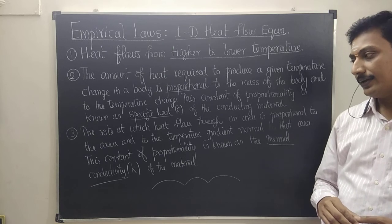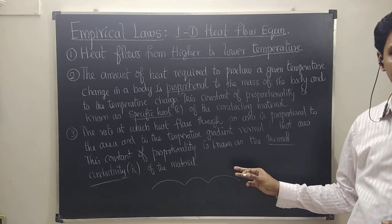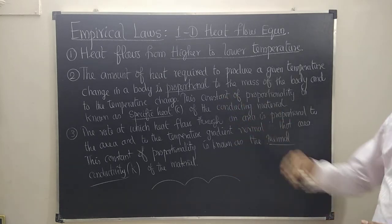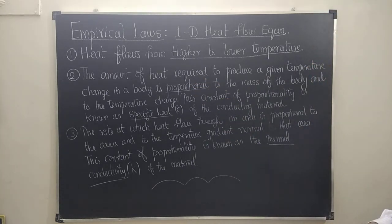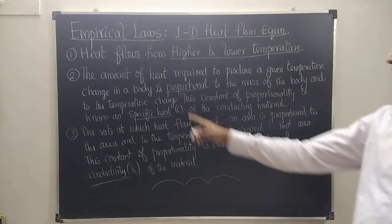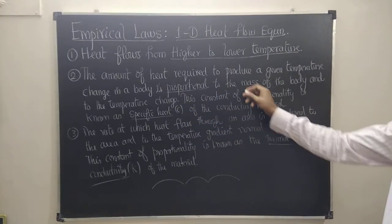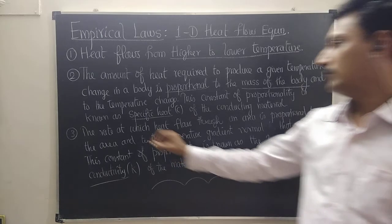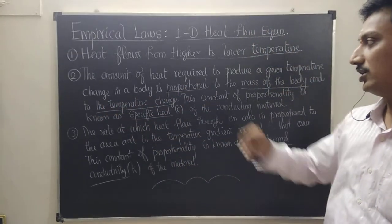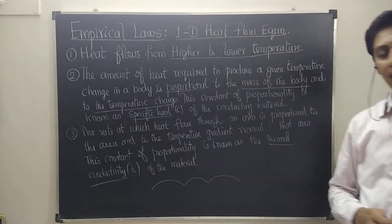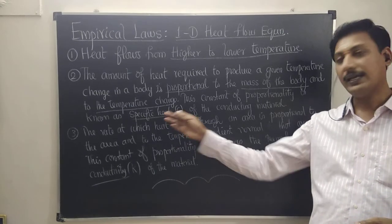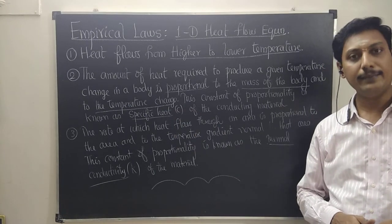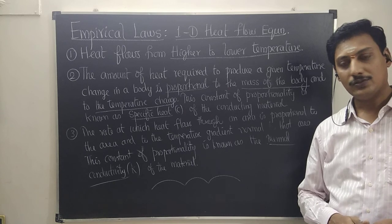The second law states that the amount of heat required to produce a given temperature change in a body is proportional to the mass of the body and to the temperature change. This constant of proportionality is known as the specific heat of the heat-conducting material.